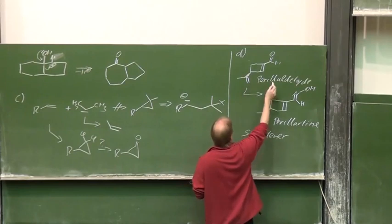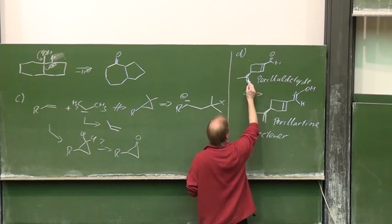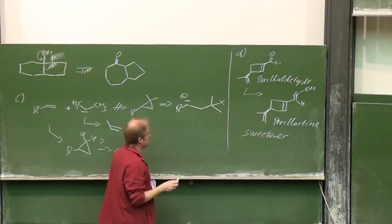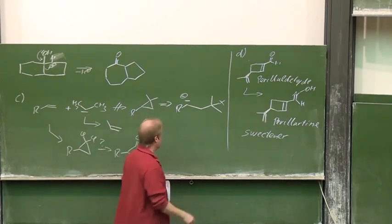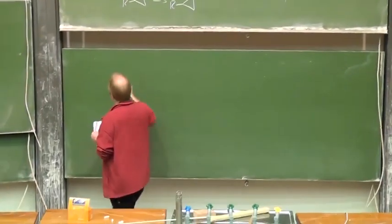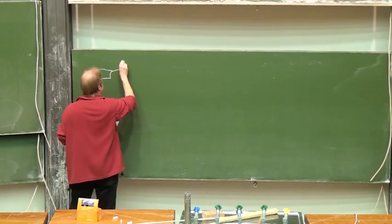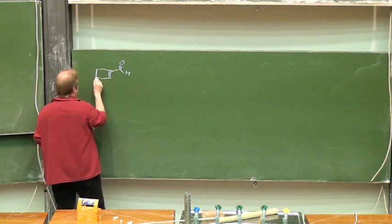In perillaldehyde we have here that chiral center and we have those three carbons here. Maybe it's possible to construct a three membered ring. Well and indeed that has been done.